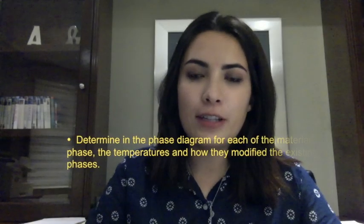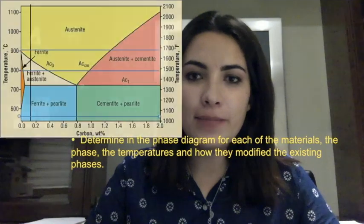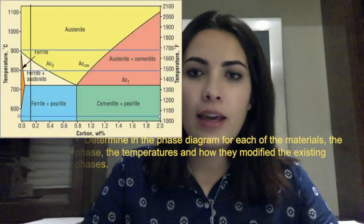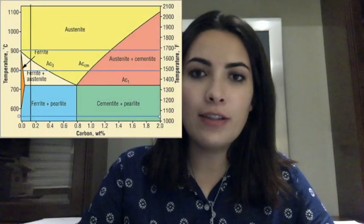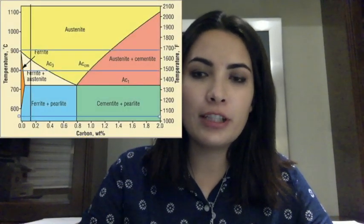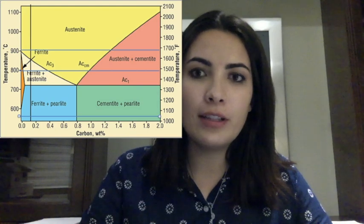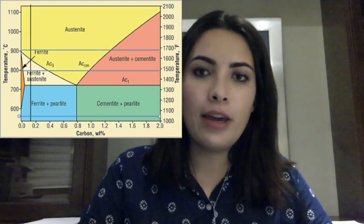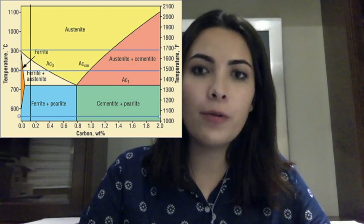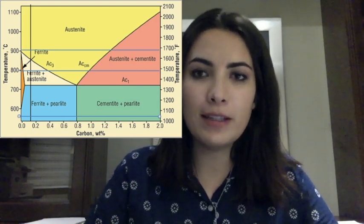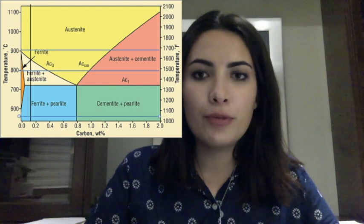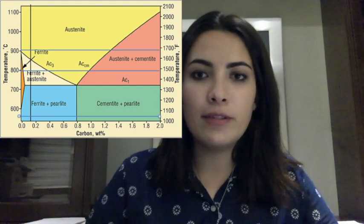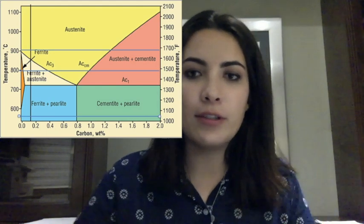In this lab we used steel 1018. As you can see in the graph, I drew a black line at about 0.18 going all the way up. We cut three pieces and made different heat treatments to each of them.